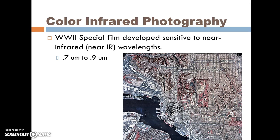Color infrared is actually a non-visible part of the wavelength spectrum. This allows us to discern certain things on the landscape, especially vegetation, so it is used extensively in forestry and other applications. The red on a color infrared image represents the vegetation.